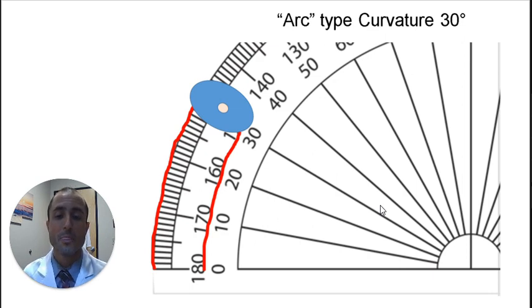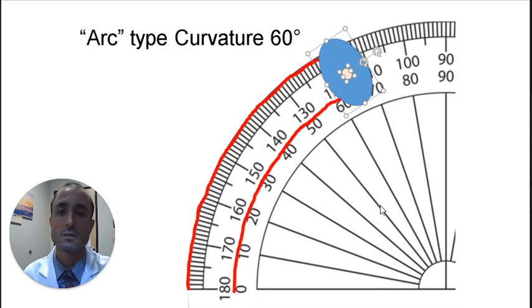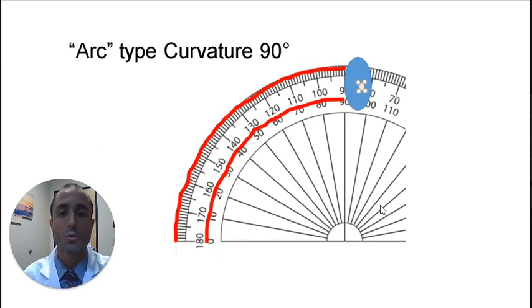On the other hand, if penile curvature came in the shape of a perfect arc, 30 degrees of curvature would look like this, 60 degrees would look like this, and 90 degrees would look like this.